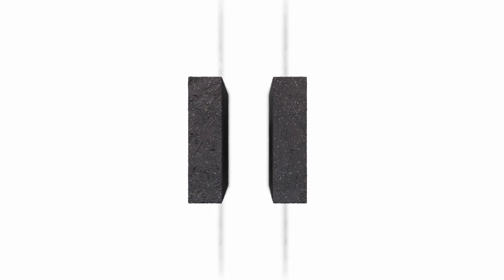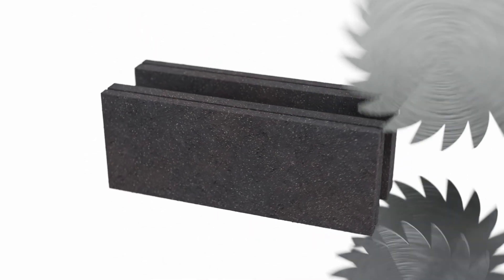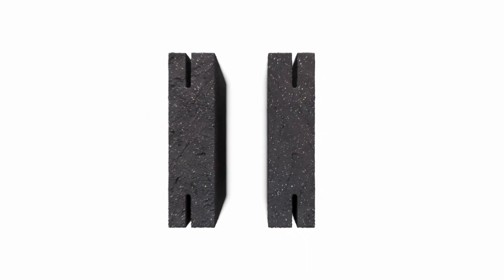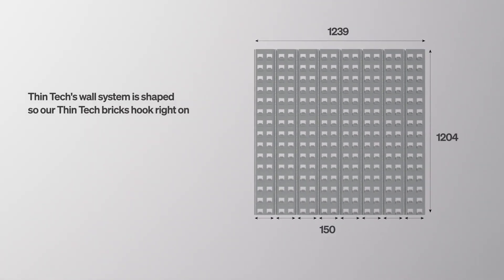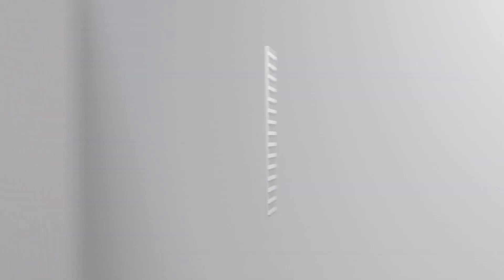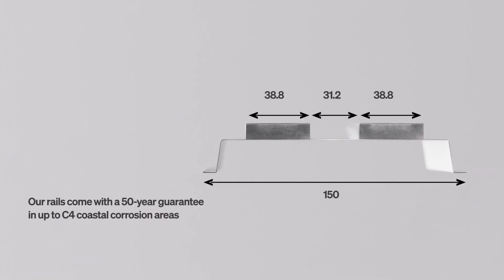ThinTech are precision-profiled to fit into the ThinTech wall system. The ThinTech wall system is shaped so that our ThinTech bricks hook right on. Made with Zam corrosion-resistant hot-dip alloy, our rails come with a 50-year guarantee in up to C4 coastal corrosion areas.